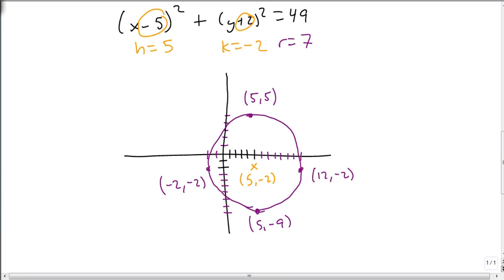So that point, that point, that point, and that point. With those 4 points, we then draw our circle. And we are done graphing our circle.